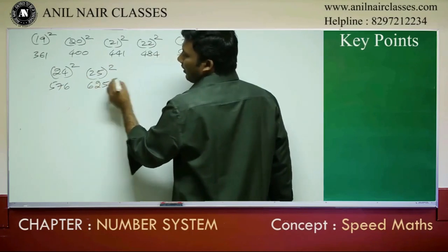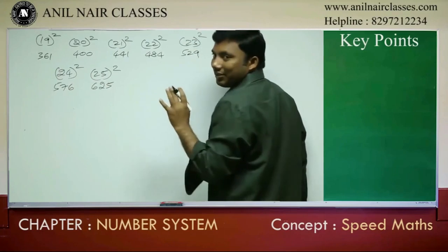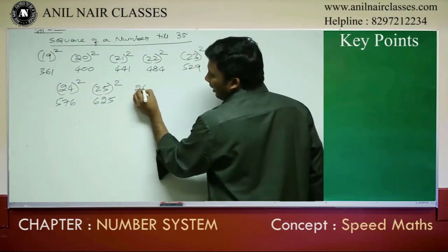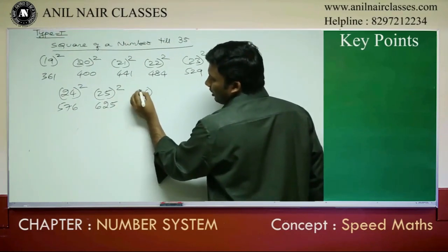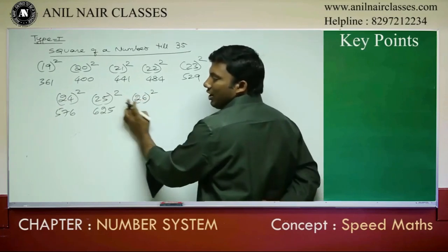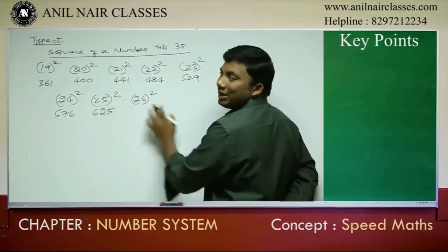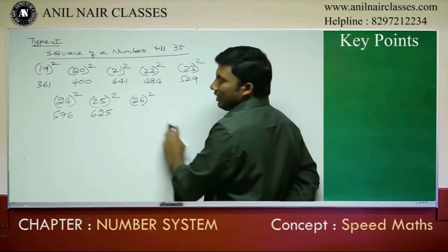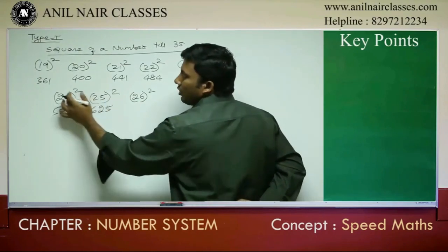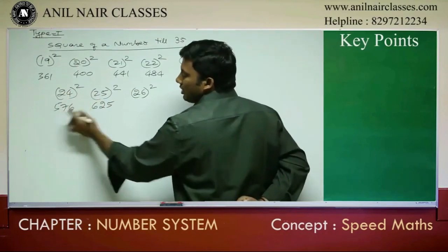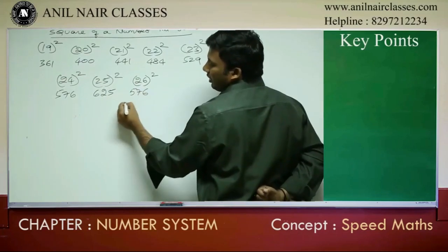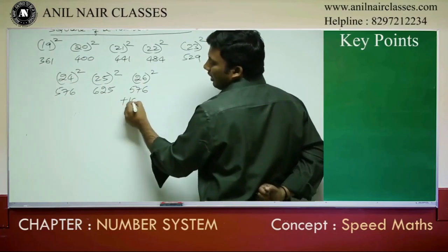Now 25 squared is 625. Listen carefully. To find 26 squared: Step 1 — 26 is how many units ahead of 25? It is 1 unit ahead of 25. So go 1 unit back from 25, which gives you 24, and 24 squared is 576. Since it is 1 unit, add 100. So 26 squared is 676.